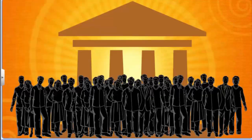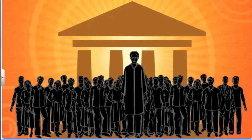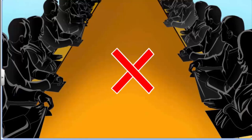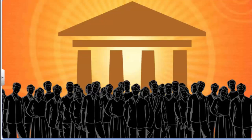Ours is a representative democracy — people rule through their elected representatives. The limitations of representative democracy are: first, it is not physically possible for all citizens to sit together and make collective decisions; and second, all citizens may not have the time, skill, or inclination to take part in the decision-making process. This limits our understanding of democracy to just government functions. For a broader understanding, we need to look at democracy beyond government.